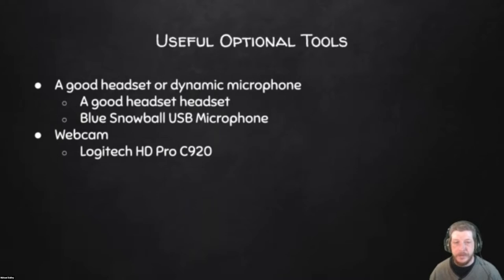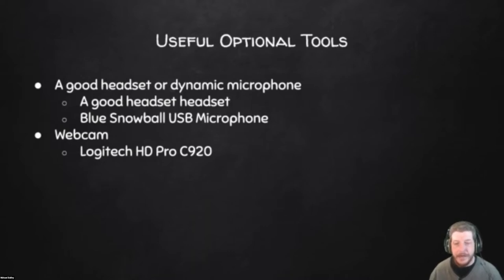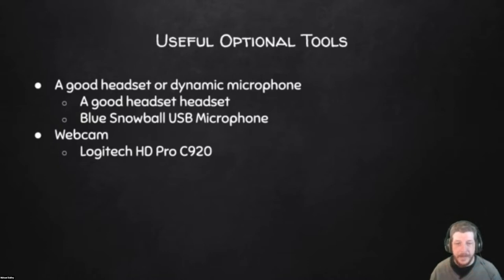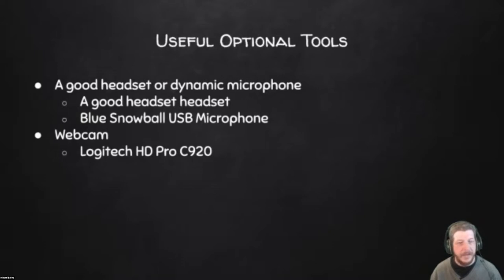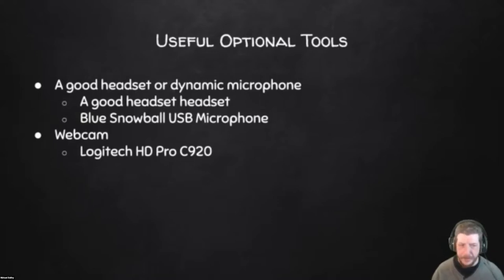Before getting into the software itself, I'd like to run down some useful information that's good to have before you record or stream. One of the things you're going to want is a good headset and a good microphone. Most headsets these days have a microphone, and thanks to the COVID pandemic and video conferencing, manufacturers have stepped up and improved their microphones. An alternative is something like a Blue Snowball USB microphone, which is extremely inexpensive but has really good clarity. It's a dynamic microphone that will give you radio voice — like a podcaster — at a budget price.